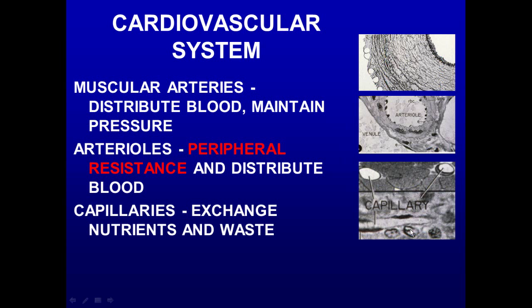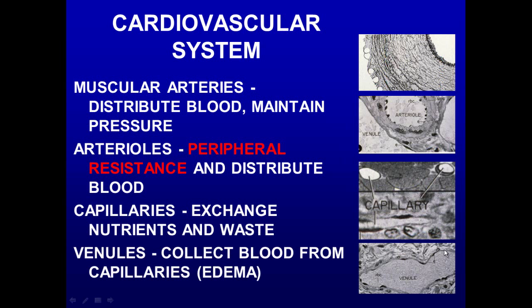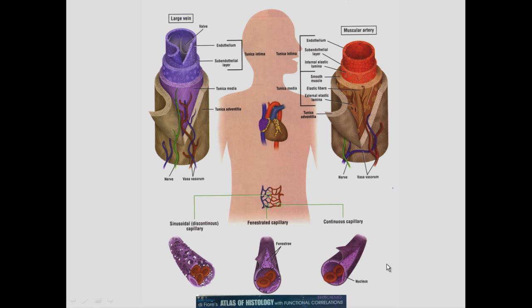Next come capillaries — we see cross-sections of capillaries and longitudinal views showing exchange of nutrients and waste. Then we have venules, where we collect blood from capillaries, and fluid from the interstitium also goes in there. This is also where edema occurs when you have leaky blood vessels. In the atlas view of arteries we see a muscular wall, connective tissue on the outside, and endothelial lining — endothelium lines all blood vessels, whether capillaries, arteries, or veins.